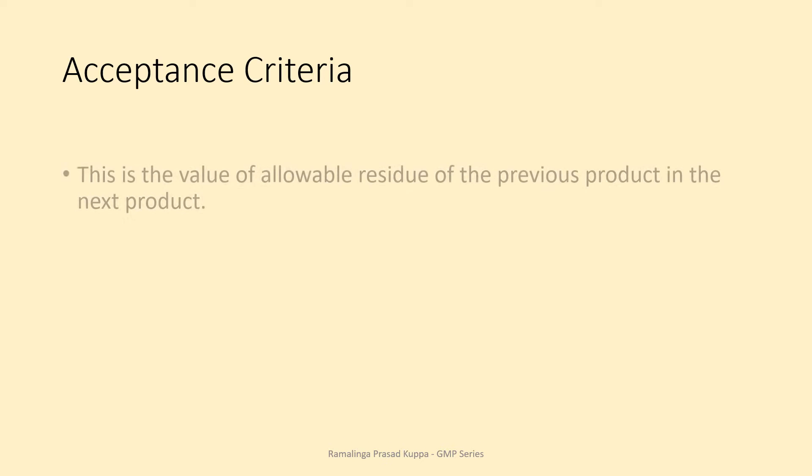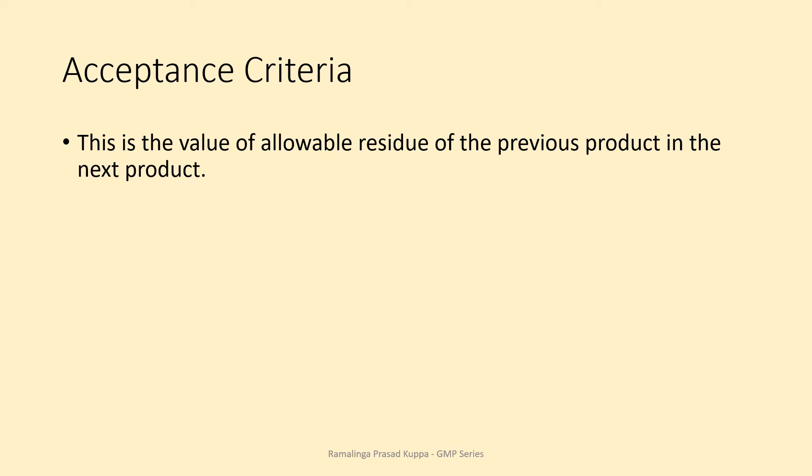Let us understand the acceptance criteria. This is the value of allowable residue of the previous product in the next product. Cleaning until the equipment is totally clean is not an acceptable practice; it is also not practical or necessary to do so. There is a term — allowable residue — so some non-significant amount of residue of the previous product may be allowed in the equipment after cleaning.